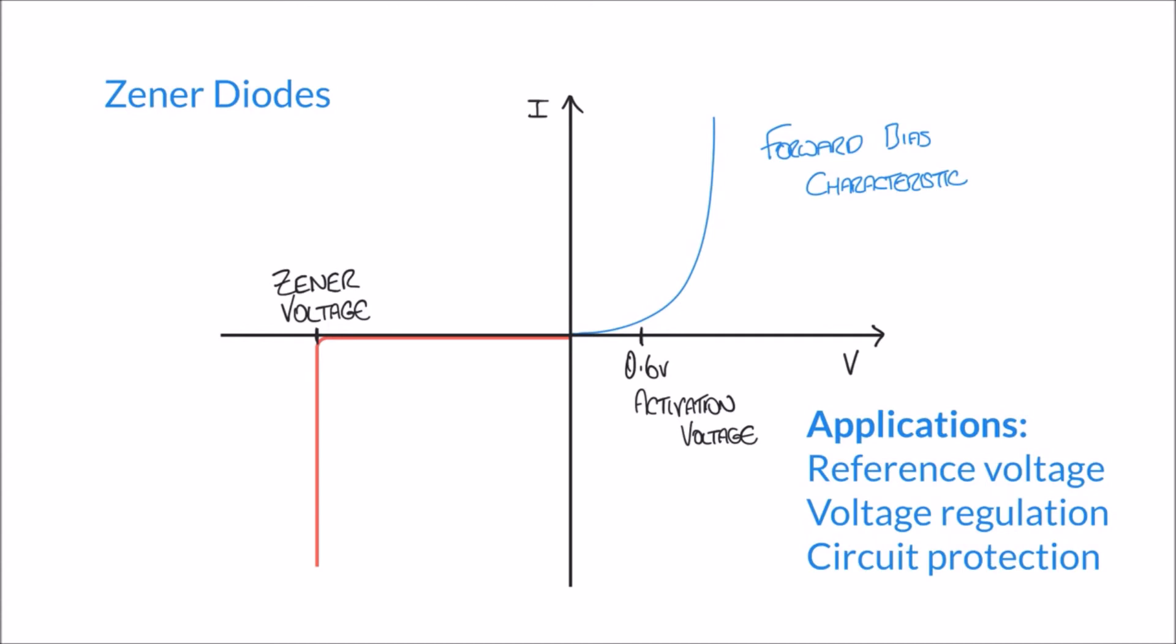And so the Zener diode has this very unique property. It allows the voltage to be regulated across the diode, and what that means is that the voltage is capped at a certain level.